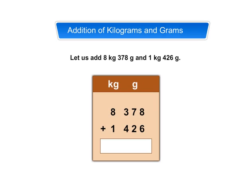Addition of kilograms and grams. Let us add 8 kilogram 378 gram and 1 kilogram 426 gram. Arrange the numbers in columns. Add grams to grams and kilograms to kilograms separately. So, the sum of 8 kilogram 378 grams and 1 kilogram 426 grams is equal to 9 kilogram 804 grams.